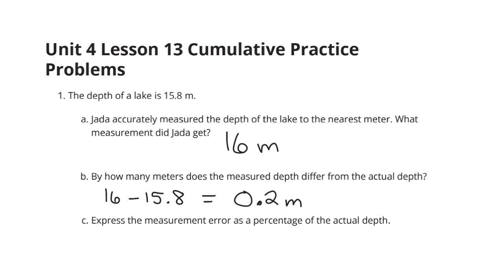Express the measurement error as a percentage of the actual depth. All right. So for measurement error, we're going to take the amount of error and divide it by the actual amount.